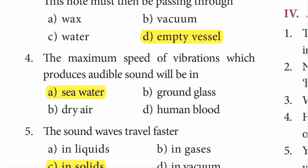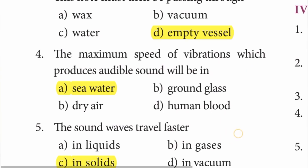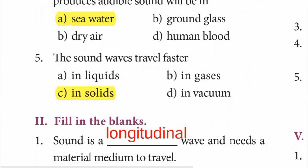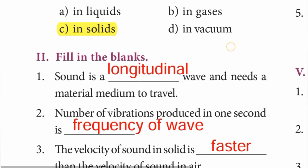Question 4: The maximum speed of vibrations which produces audible sound will be in sea water. Answer: option A — sea water. Question 5: The sound waves travel faster in solids. Answer: option C — in solids.